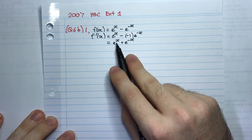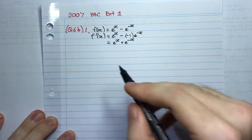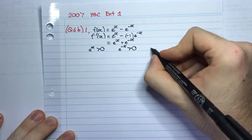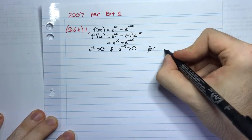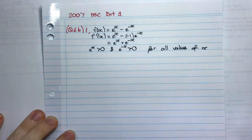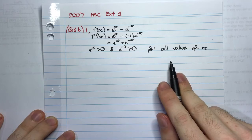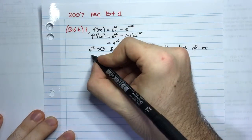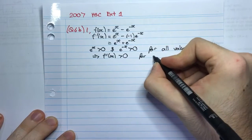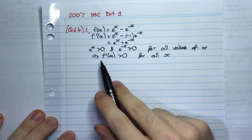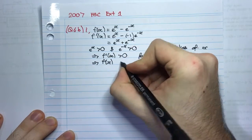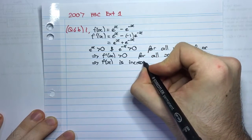And is that the case? Yes it is — this is greater than zero. Why? Because e^x is always greater than zero, and e^(−x) is always greater than zero for all values of x. Every exponential function is always greater than zero. So if I'm adding up two things that are always positive, their sum is always positive for all x. And if the function's derivative is strictly greater than zero for all x, then f(x) is increasing.